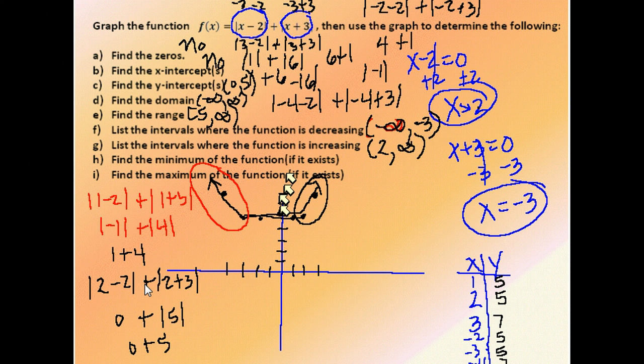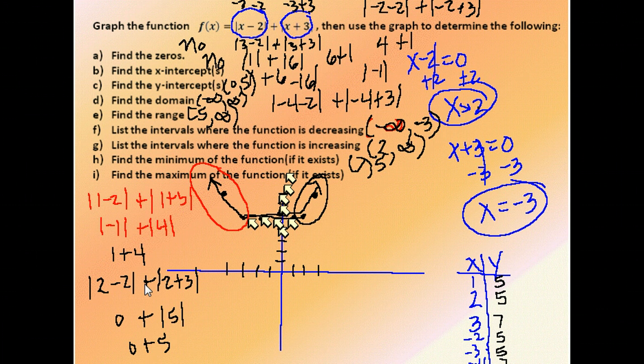A minimum for the function. Well, our minimum is a lot of values right here along this constant. So what we're going to do to describe those, the y value for each of those is a 5. Our x value is changing, so we're going to call it the point (x, 5), where x is between negative 3 and 2, including those numbers. So that's how we would write that. There is no maximum because it doesn't stop at the top, it goes up forever.